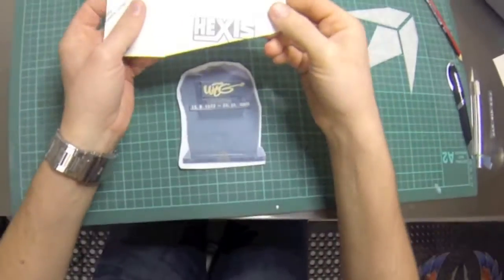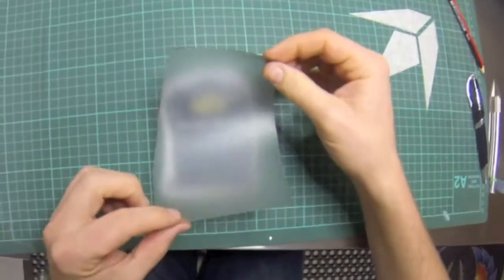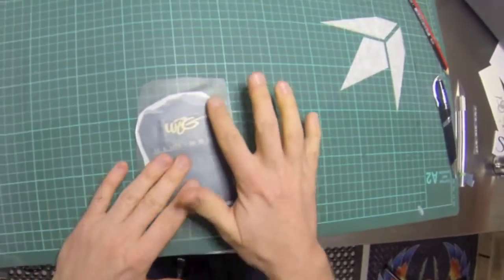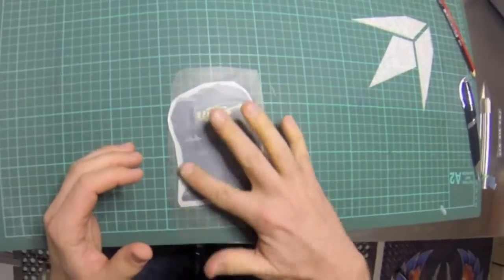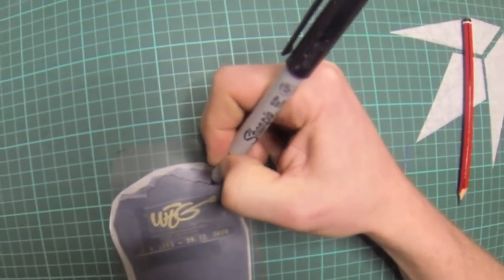Welcome to the Harley gravestone horn cover video. You can see here I've got a bit of Hexis spray mask, so it's just a see-through vinyl which I use a lot for masking, great for application and all that sort of thing.